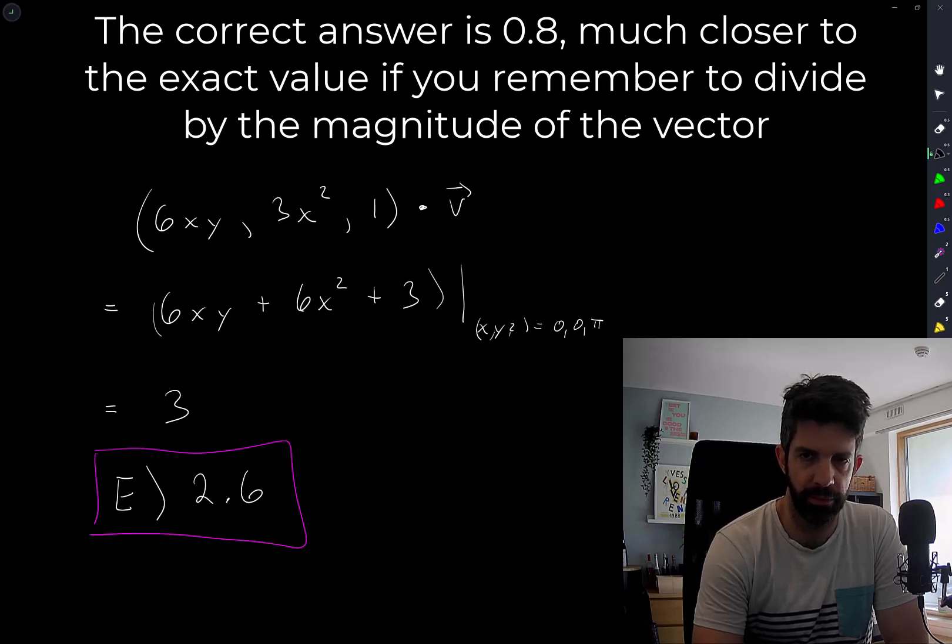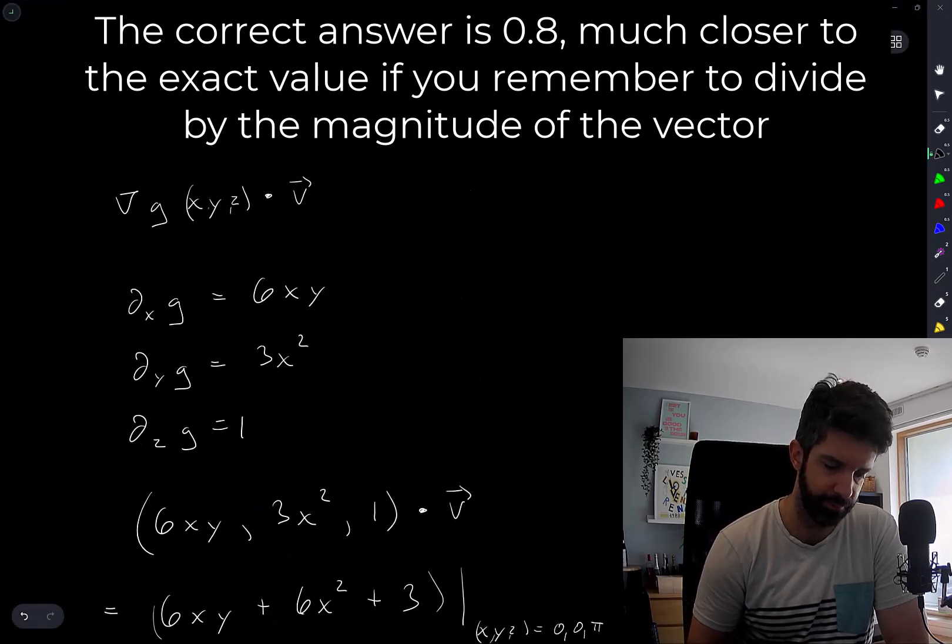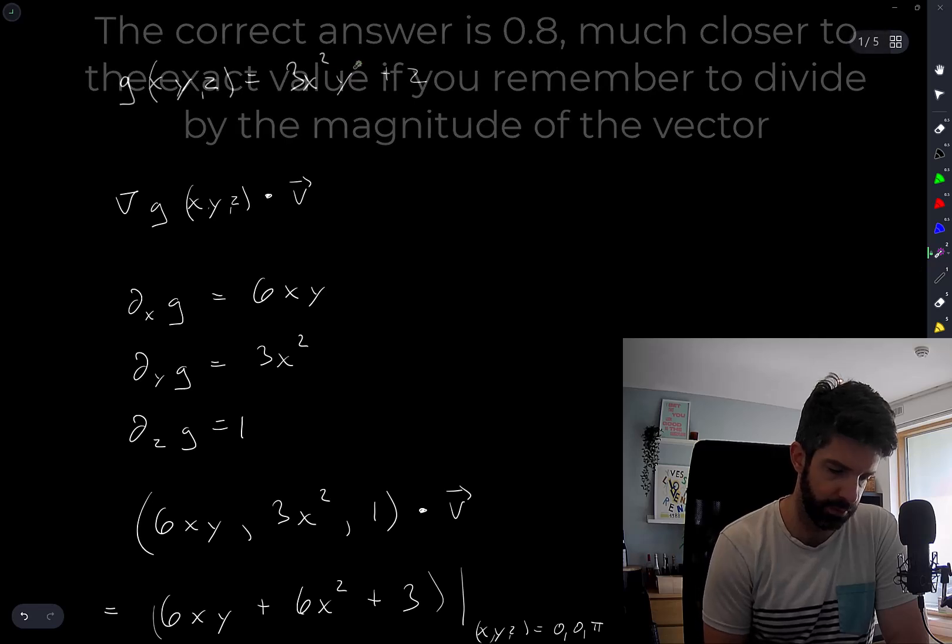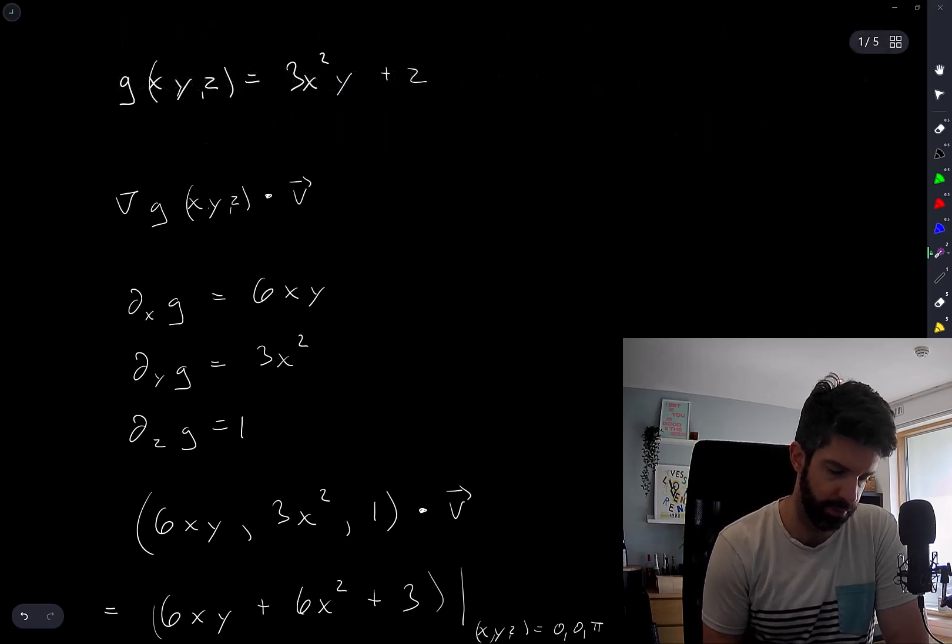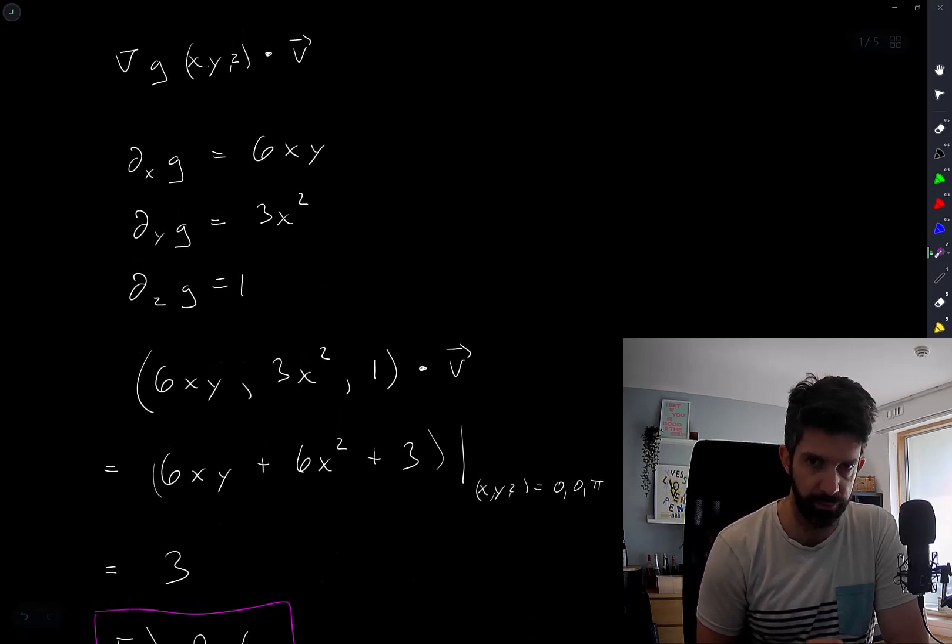I did this correctly, right? Did I take the gradient correctly? 6xy, 3x squared. Derivative with respect to z is 1. Take a dot product with this vector, i plus 2j plus 3k.